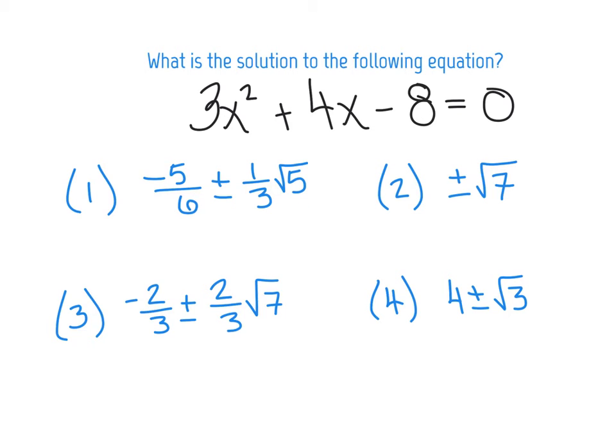So I've got negative 5.6 plus one divided by three times the square root of five. Okay, store that as x. And now I'm typing in 3x squared plus 4x minus eight. I hit enter. Oh boy, I definitely did not get zero. I got, let's see, negative 8.328. So we've really proven, because we didn't get zero, we've proven that this is not a good choice.